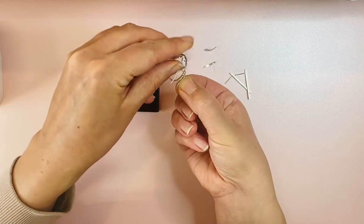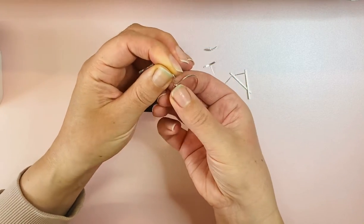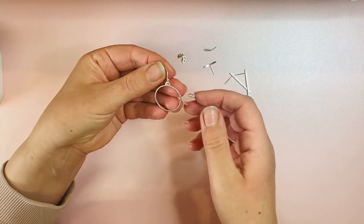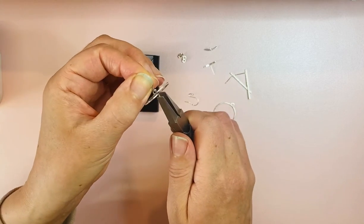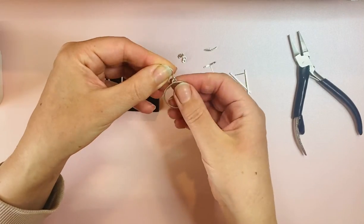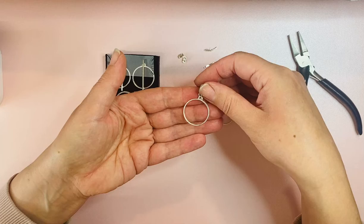Thread these over the hook like so and then just very gently push it together. Now if you don't have any fingernails that is a bit tricky. If you do have a pair of pliers you can very gently use those to close that gap. So they can be worn as earrings like that.